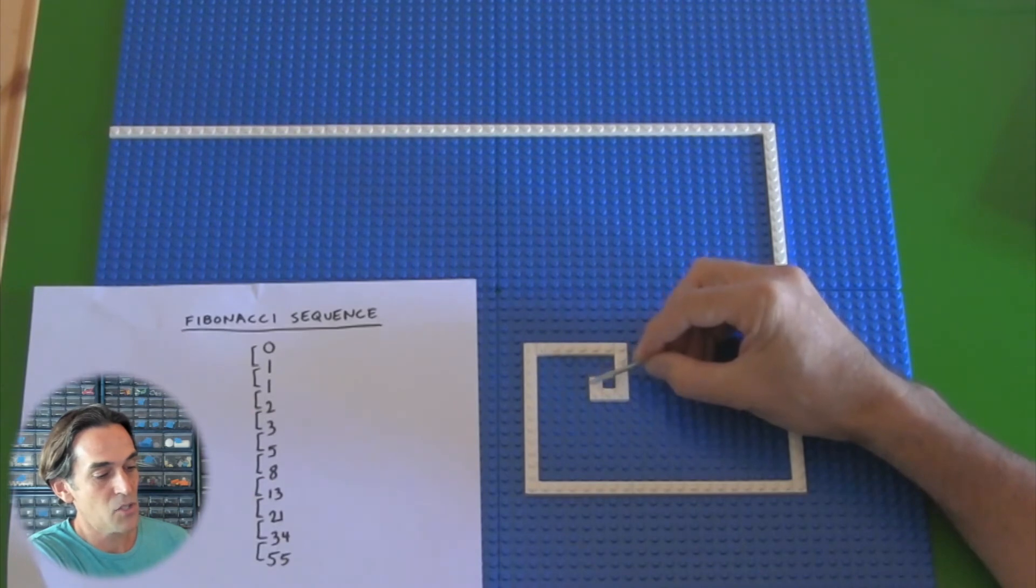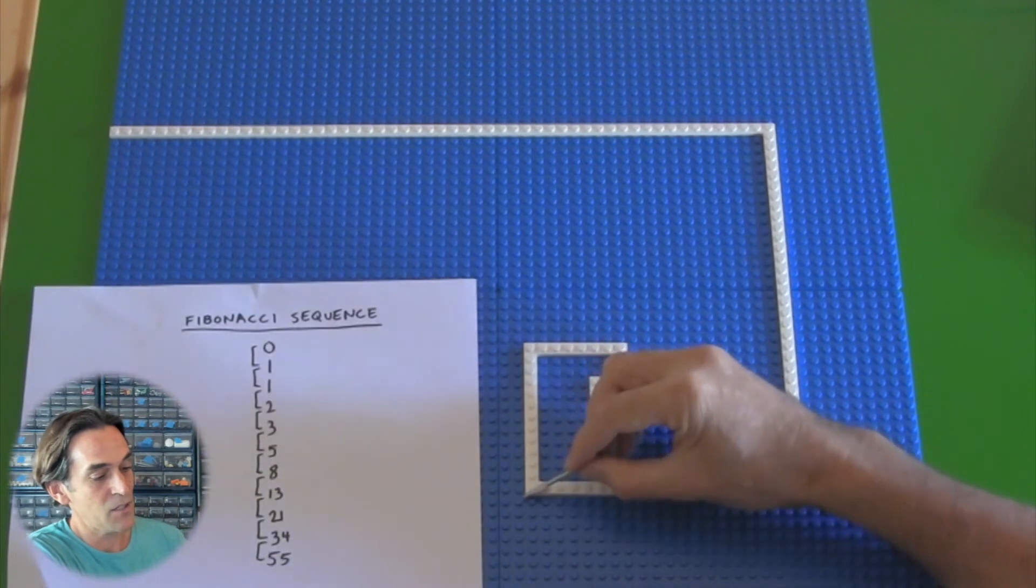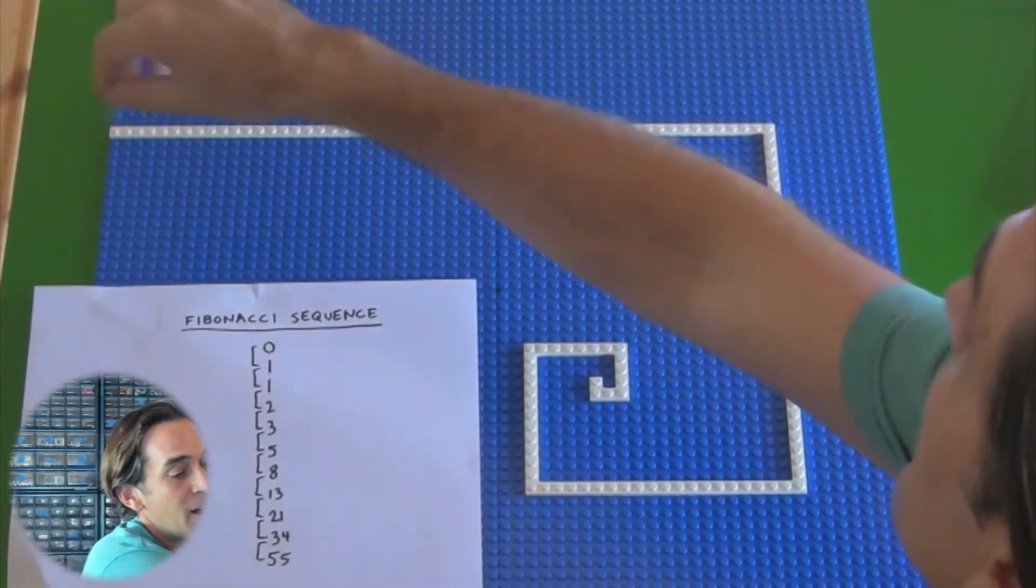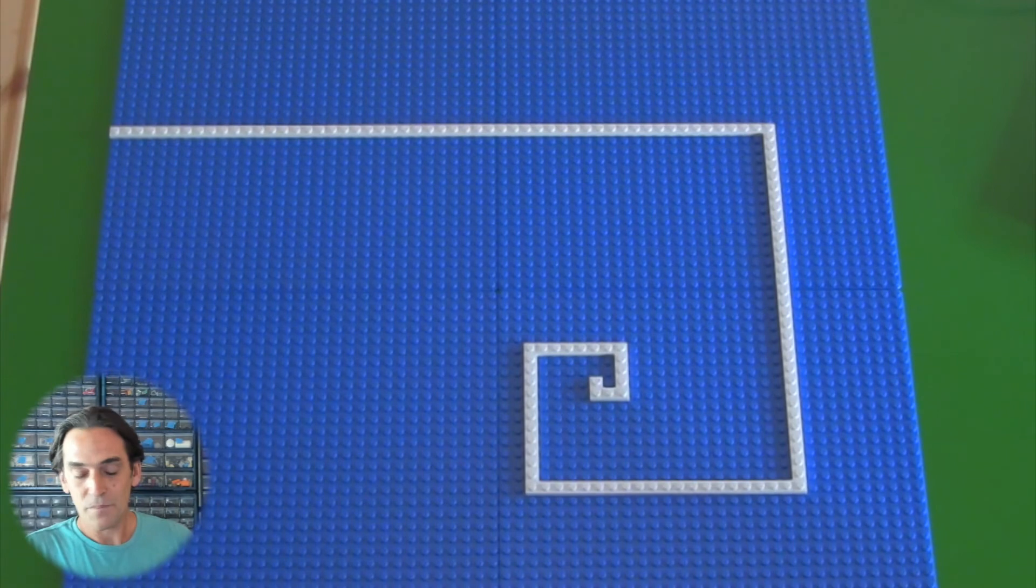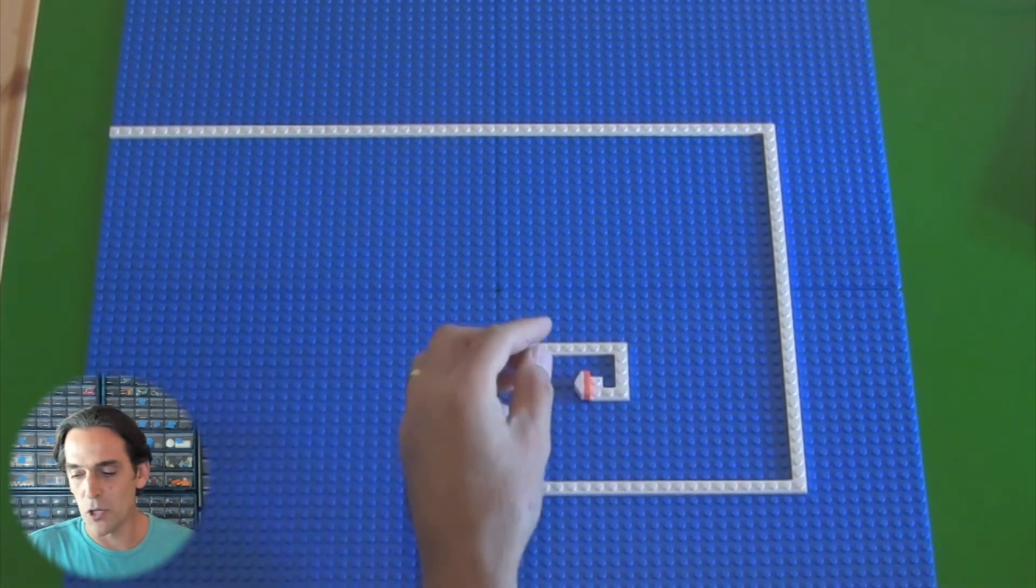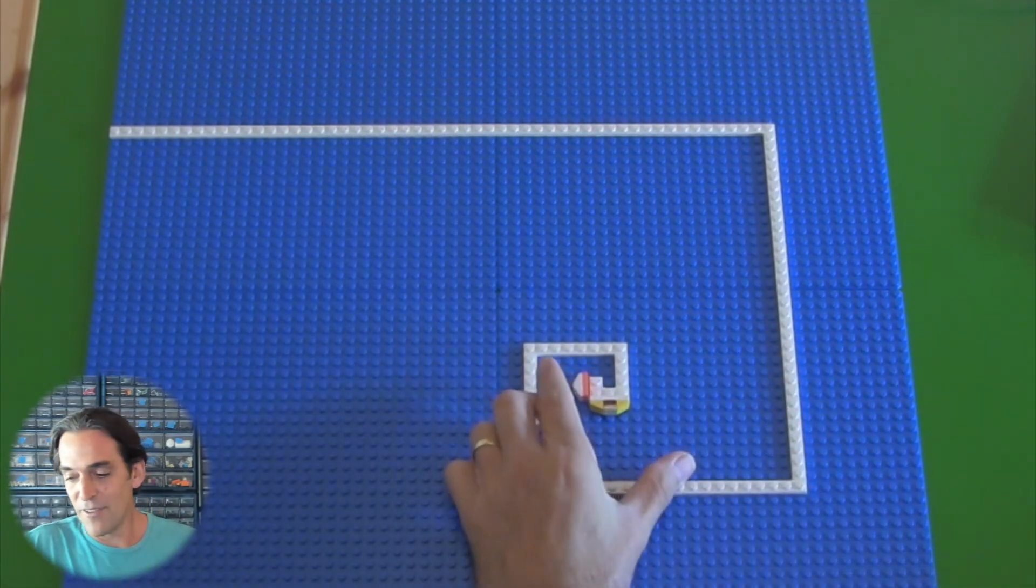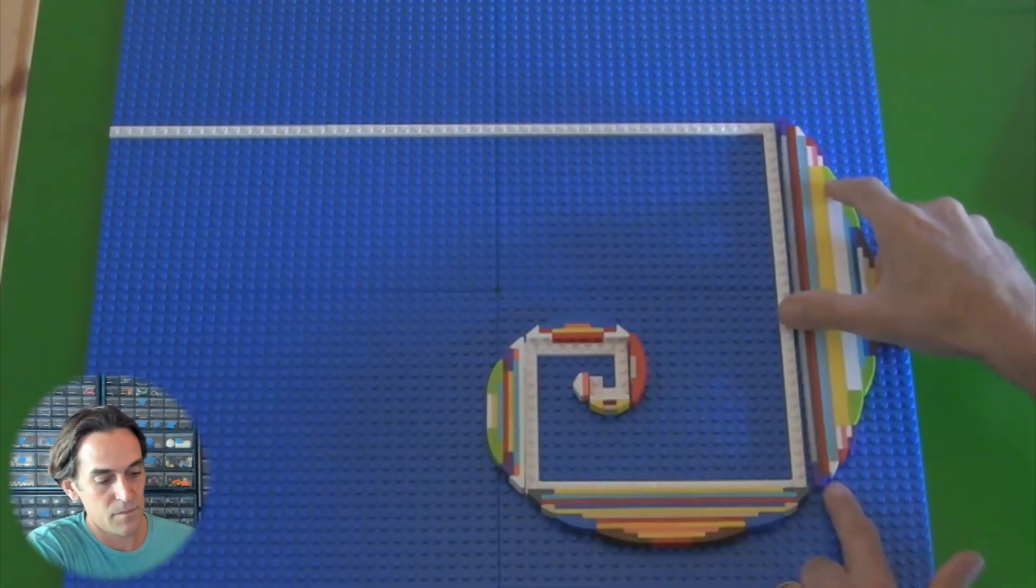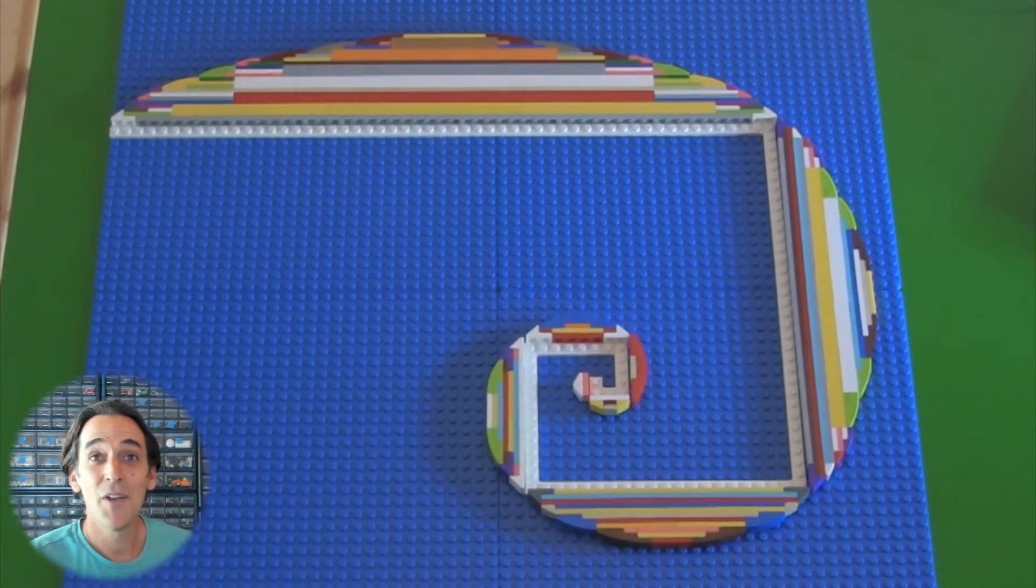There's a one here, one across there, two, three, five, eight, thirteen, twenty-one studs along here, thirty-four and fifty-five across the top. And to make this spiral really come to life, I tried to build some little slopes out of plates and different slope pieces that fit around the edge. So there you have it, a rainbow Fibonacci spiral.